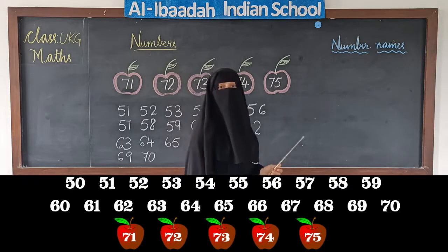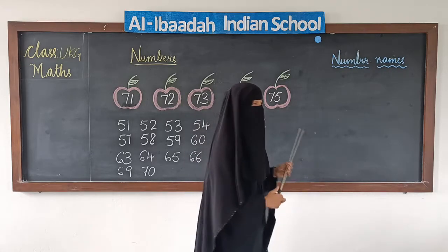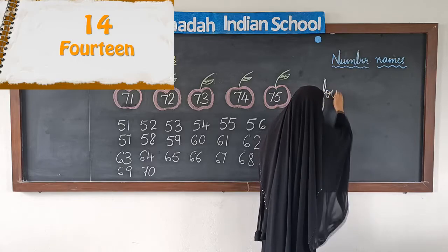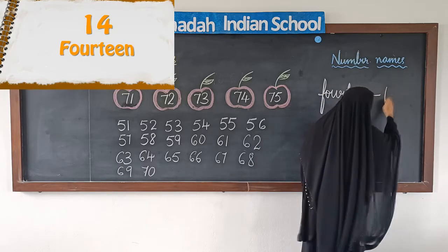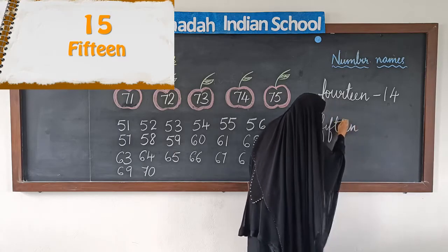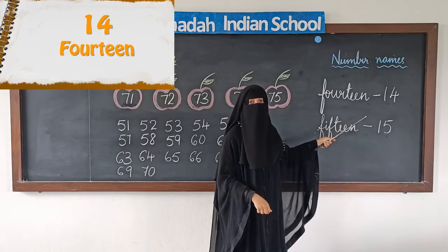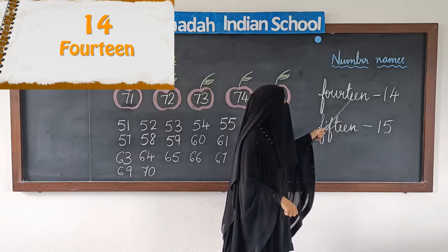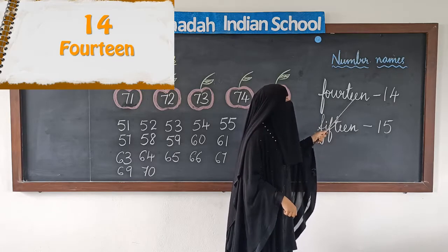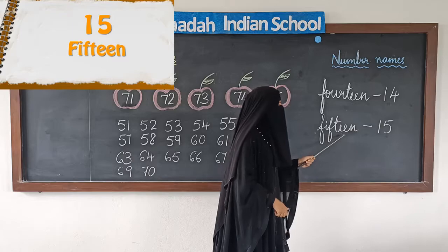In the previous class we also learnt the number names: 11, 12, 13. After 13, the spelling of 14 is F-O-U-R-T-E-E-N. After 14 comes 15. The spelling of 15 is F-I-F-T-E-E-N.